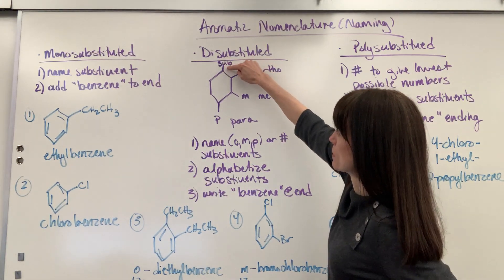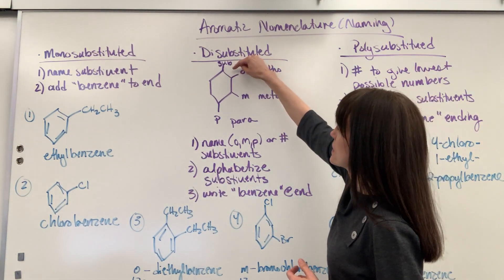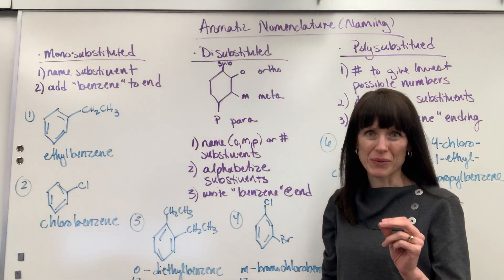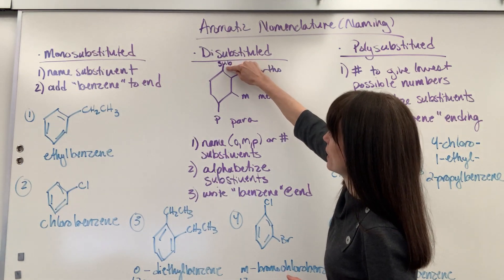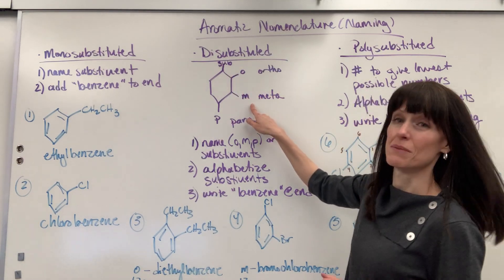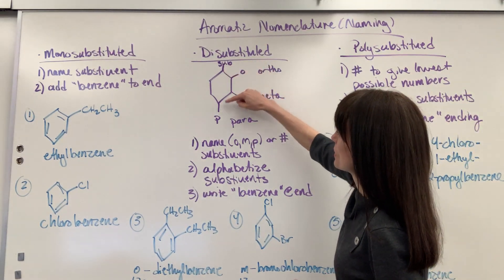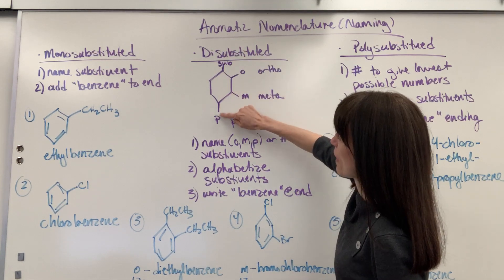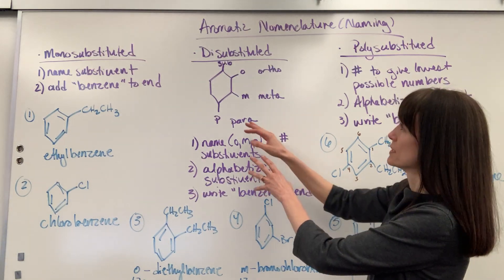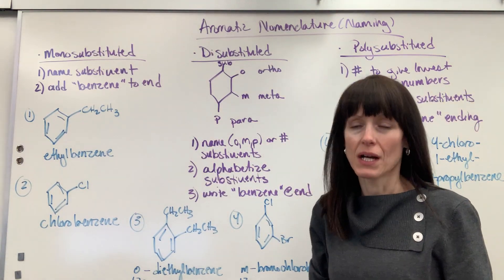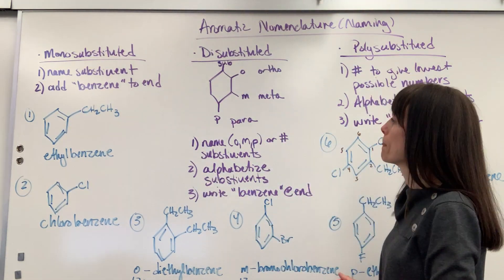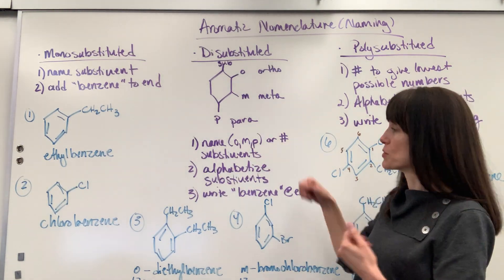You're going to have a substituent and we'll say that's our one spot. If the substituents are right next to each other — the one carbon and the two carbon — we call that ortho. If the substituents are from the one, two, three, so between the one and the three carbon, that would be called meta. And if we're between the one, two, three, four — a substituent and that fourth carbon — that would be called para. So first you have to figure out if it's ortho, meta, or para, or number it.